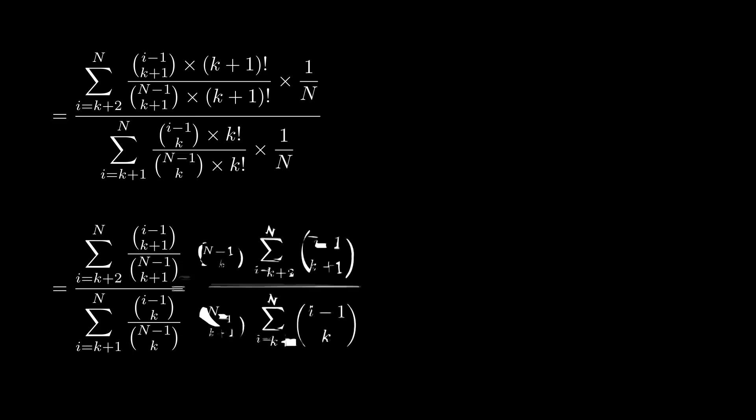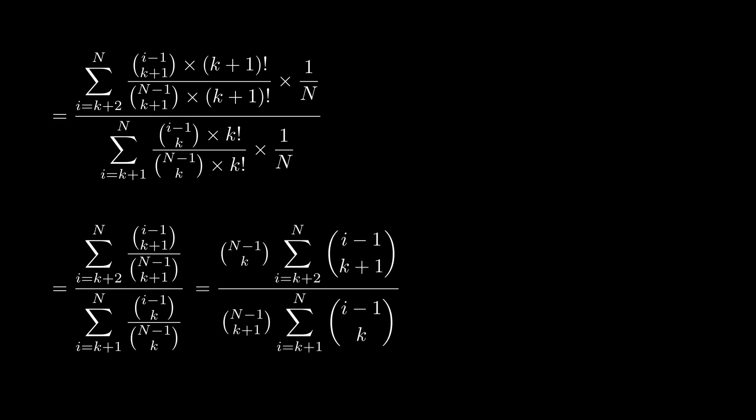And some fixed terms to be dragged out. And then, using hockey stick identity on Pascal triangles, we can find a closed form for this. And more cancellation, and we get to k plus 1 over k plus 2, which is 2 over 3 for k equals 1.